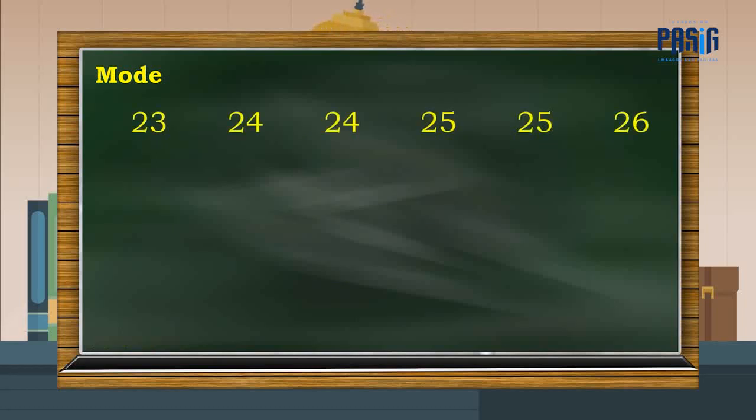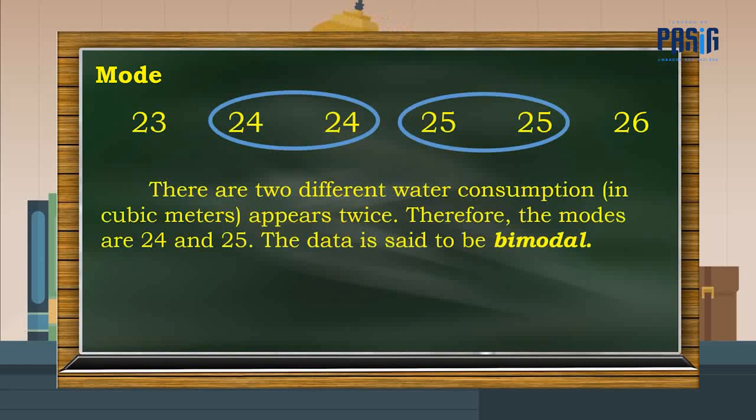Let us now identify the mode. Yes, there are two different water consumption that appears twice. Therefore, the modes are 24 and 25. The data is said to be bimodal.